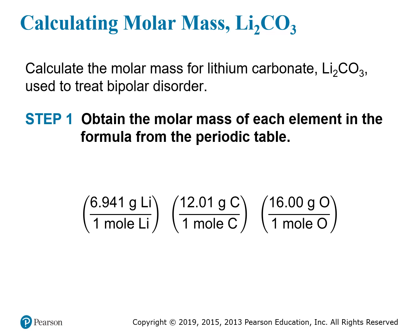Step one is to obtain the individual masses for each element in the formula from the periodic table. Lithium has a molar mass of 6.941 grams, carbon has a molar mass of 12.01 grams, and oxygen has a molar mass of 16.00 grams. On your periodic table, oxygen may be given as 15.999, but rounded to one or two decimal places it's 16, so we typically use 16 for oxygen's molar mass.